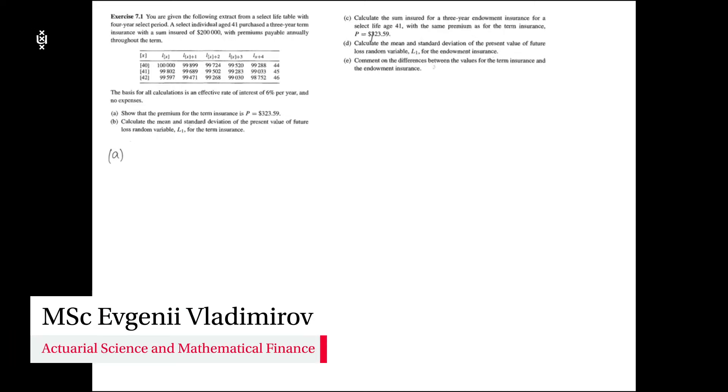Welcome to exercise number 7.1. In this exercise we are given an extract from a select life table with a 4-year select period. A select individual aged 41 purchased a 3-year term insurance with a sum insured of $200,000. Premiums for that insurance are paid annually throughout the term. We assume there are no expenses and the interest rate is 6% per year. In the first part of this exercise we need to verify the premium value for the term insurance P.